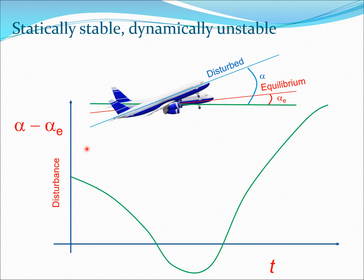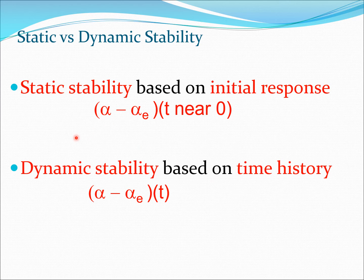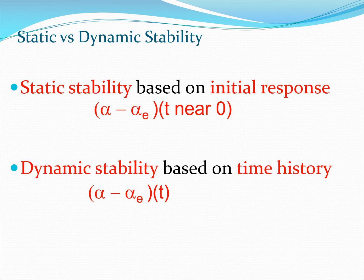We can also have a dynamically unstable system that is statically stable. Here, near t equal to zero the system is statically stable — it initially goes down toward its starting position — but after some time it tends to diverge. This is a clear case where you have static stability but not dynamic stability. Mathematically, static stability is based on the initial response of the system — the behavior of alpha minus alpha_e at t near zero — while dynamic stability is based on the full time history of the system.